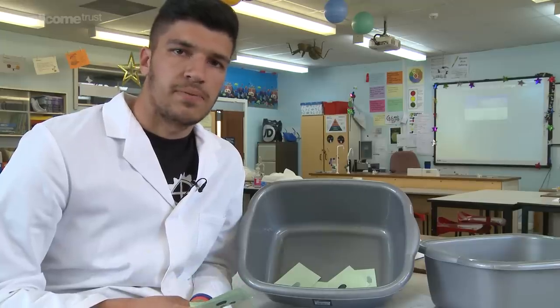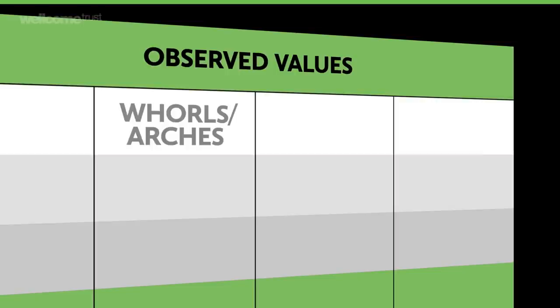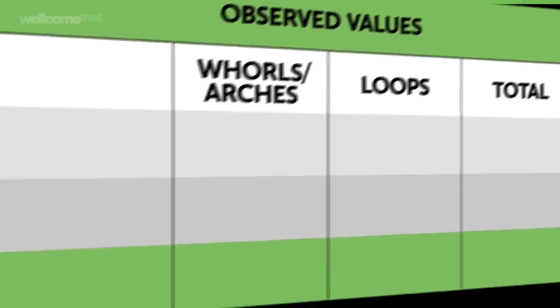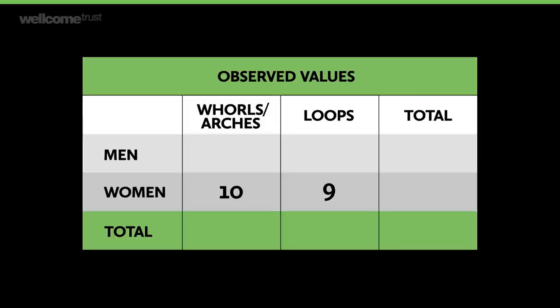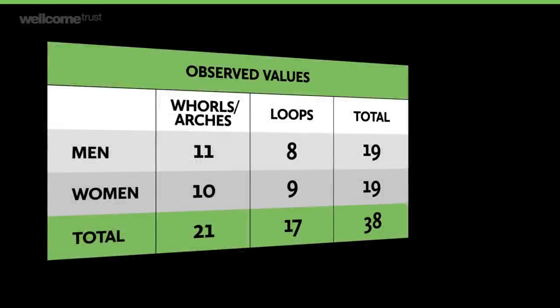We've collected all our data on fingerprint type. To do a chi-squared test, we set up a contingency table with columns for our two main categories of fingerprint types and one for the total, and rows for each category of sex plus a total row. In our experiment, ten of the women had whorls and arches, and nine had loops; among the men, eleven had whorls and arches and eight had loops. We add up the numbers in corresponding rows and columns for the totals. From our data, it seems like women might be more likely to have loops than men — but is this due to random chance?